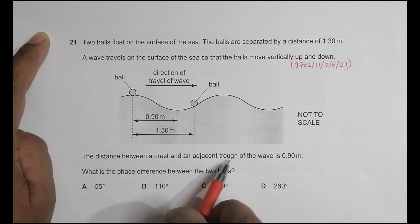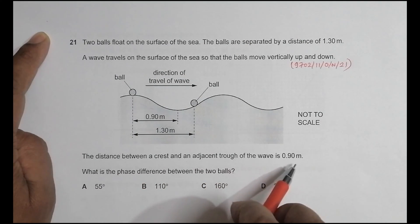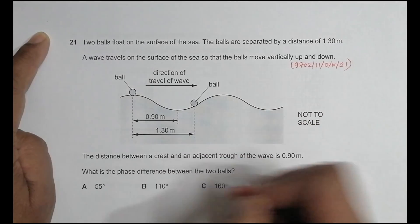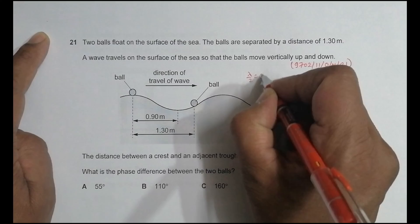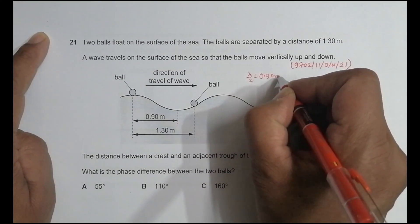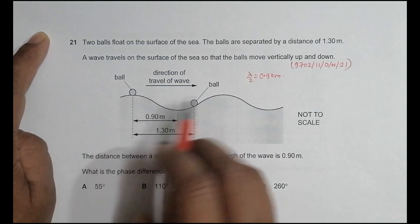The distance between a crest and an adjacent trough of the wave is 0.90 meters. So it means that if distance is 0.90 meters, it means that lambda by 2 is equal to 0.90 meters. Because from crest to crest it is lambda.